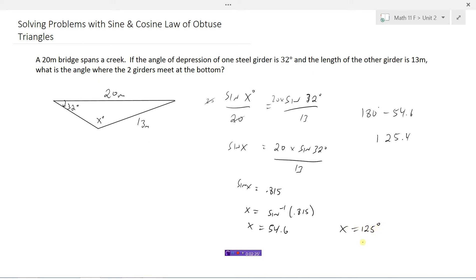So basically 125 degrees would be the angle in between those two girders. There's one where we use the sine law and specifically we had to remember that we needed to go 180 minus the angle because we were finding an obtuse angle.